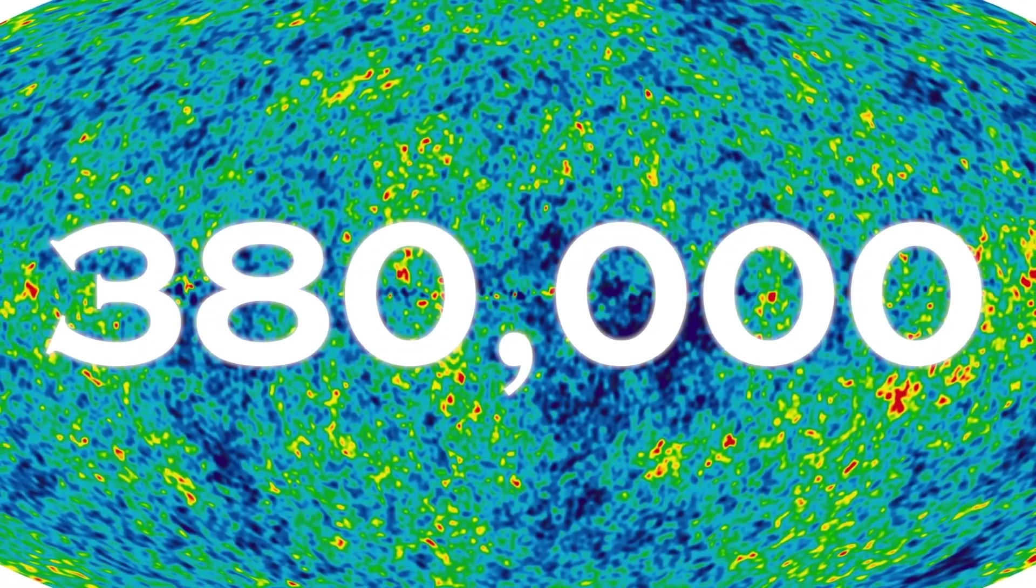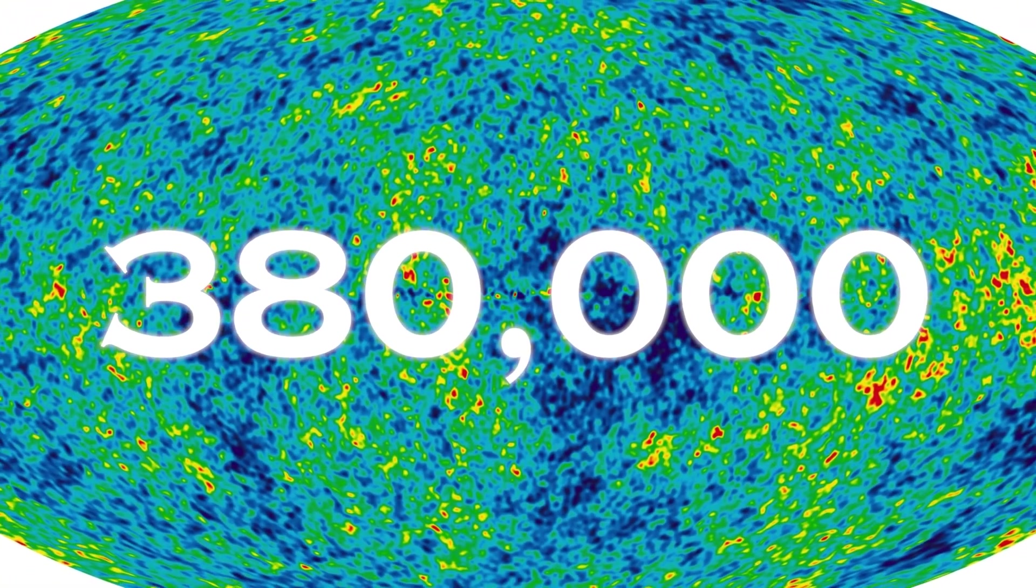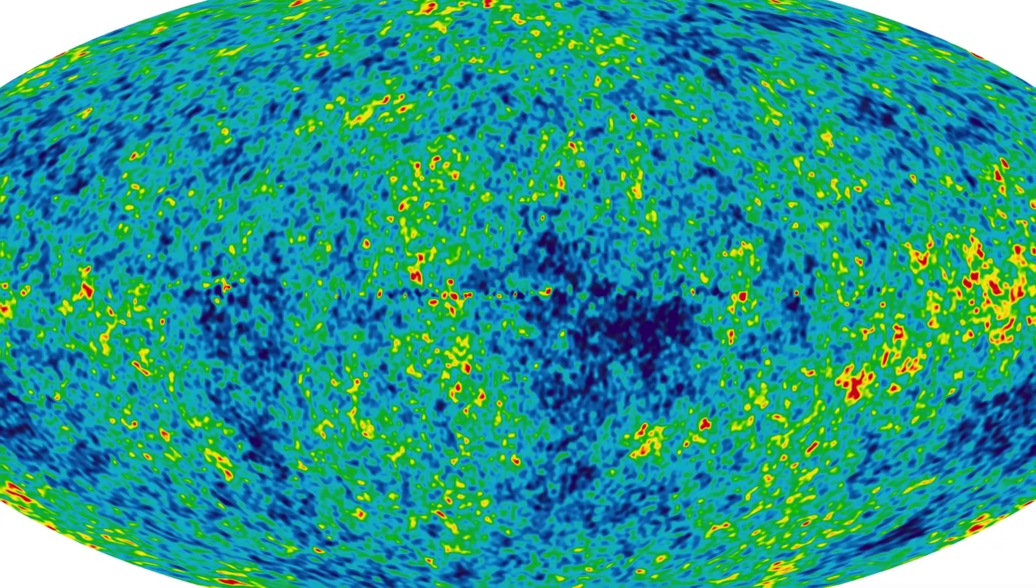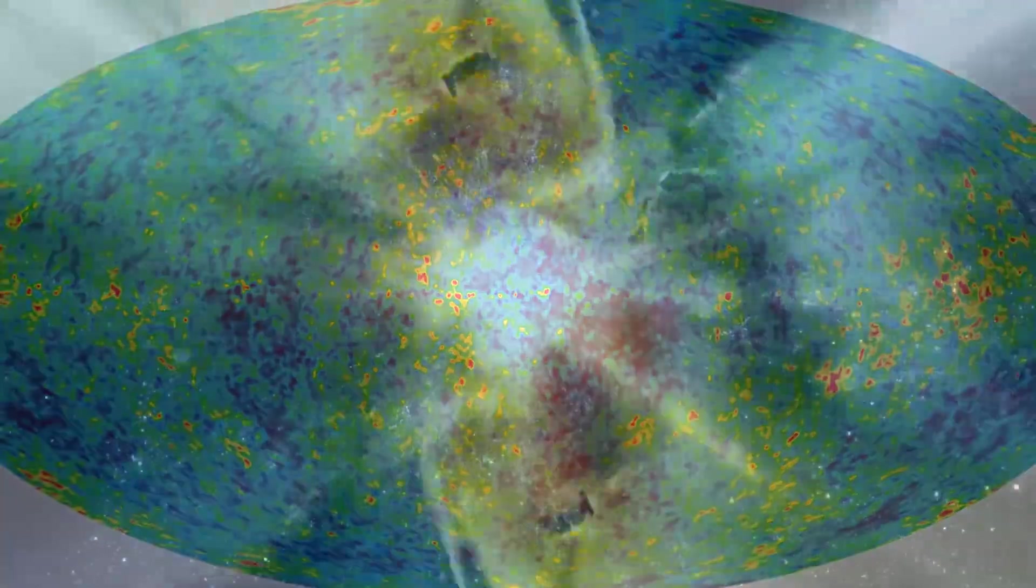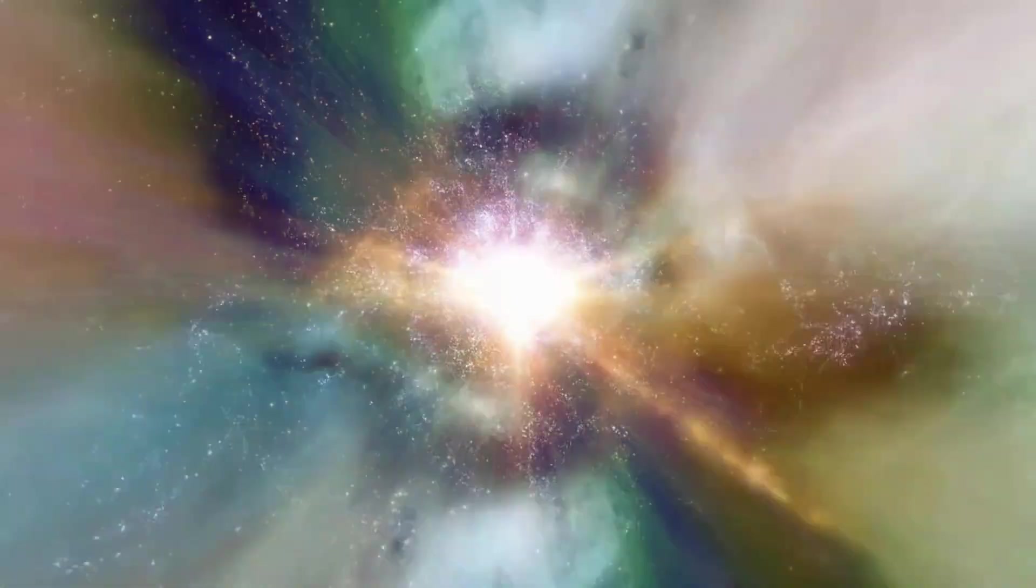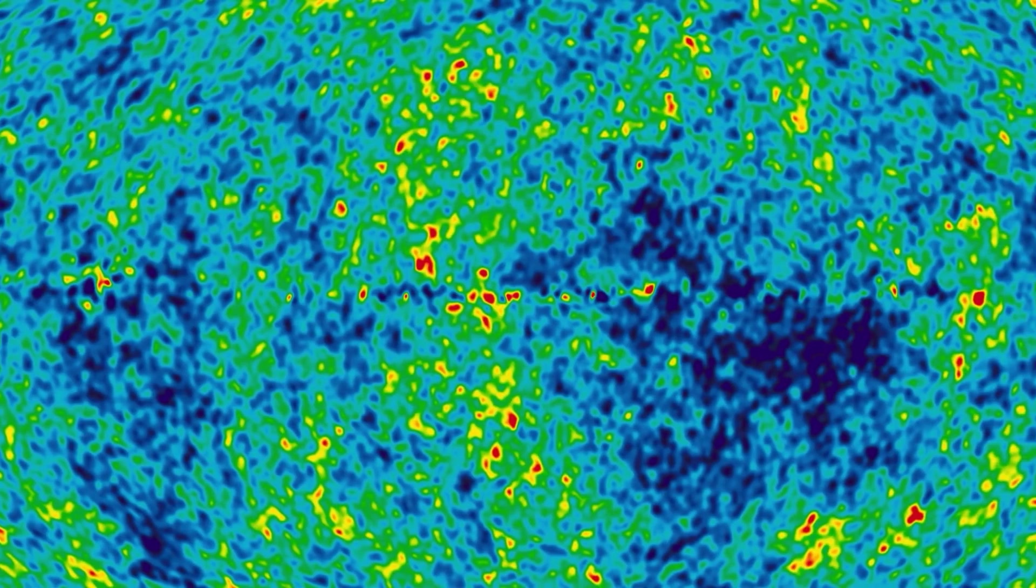This microwave energy comes from when the universe was only 380,000 years old. Astronomers can determine the age of the universe and its expansion rate by measuring the tiny ripples of temperature and polarization emitted by the CMB.